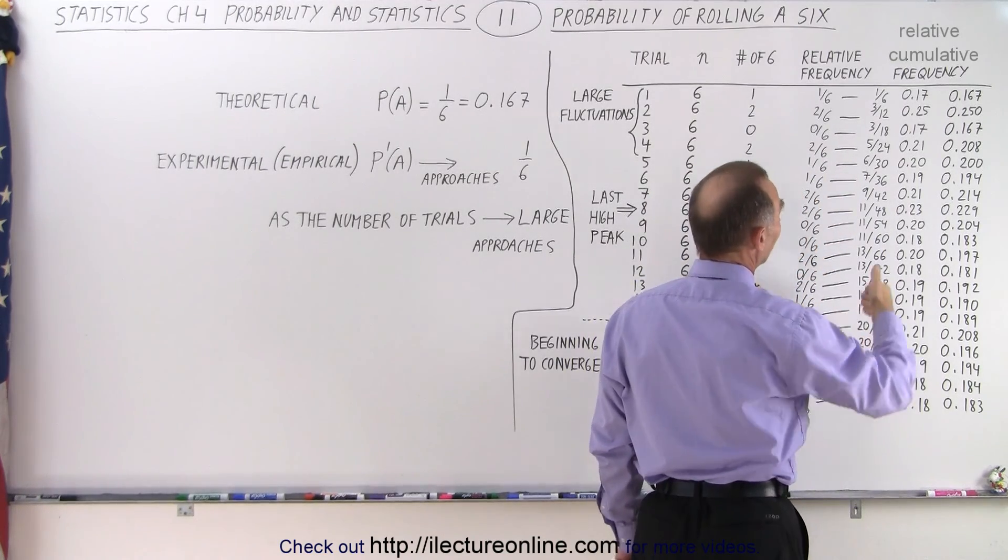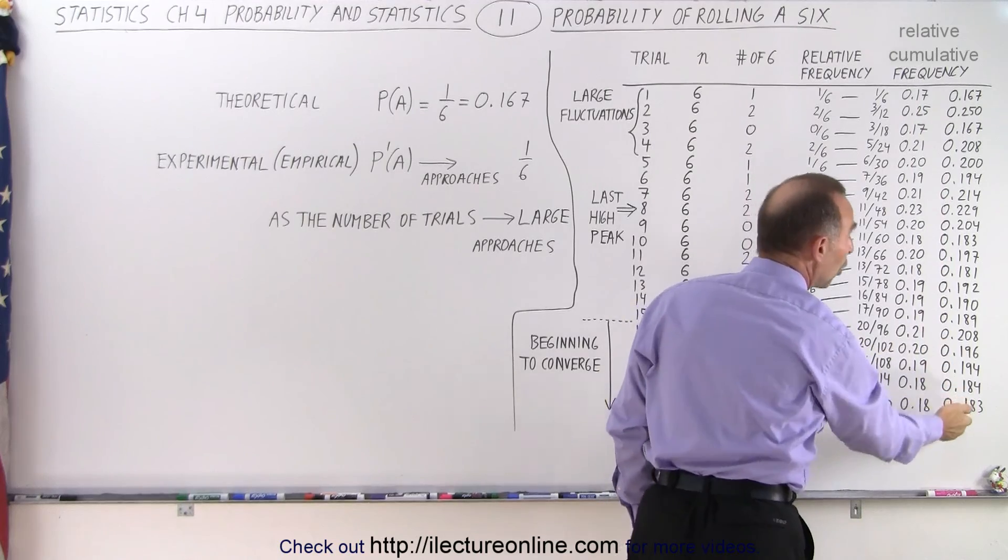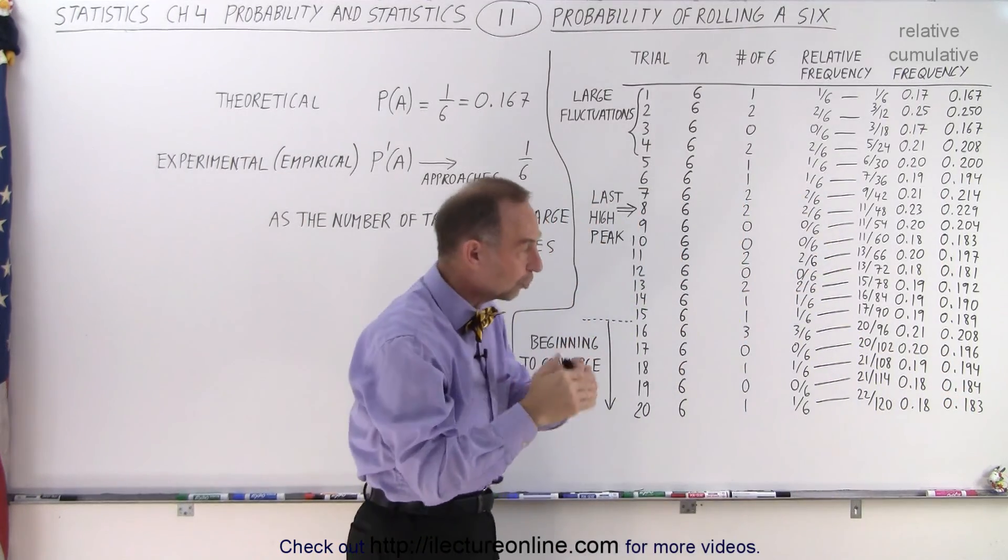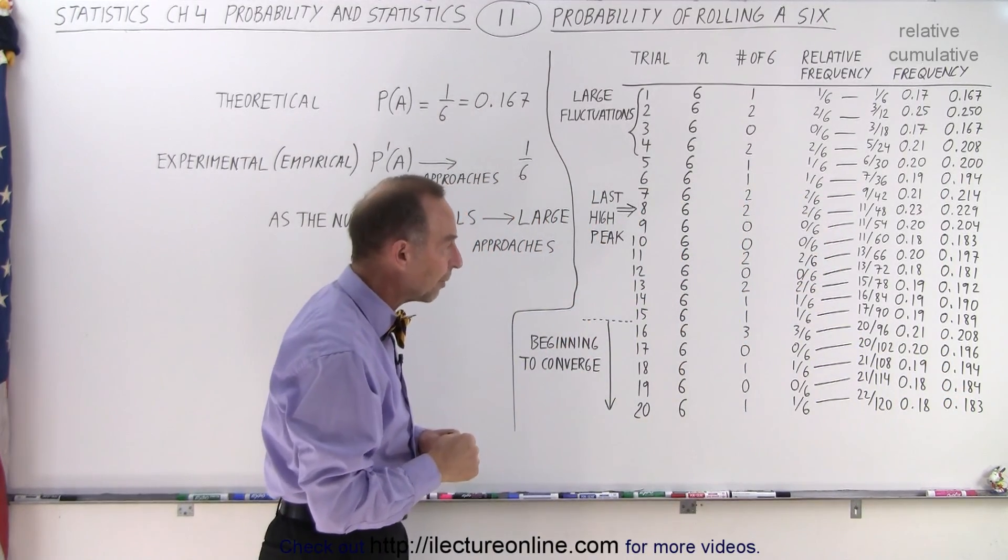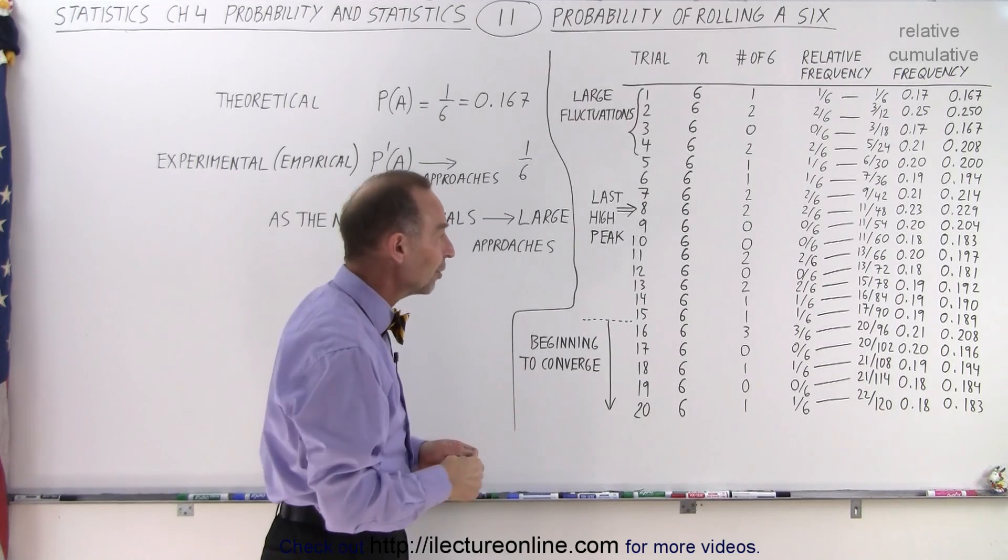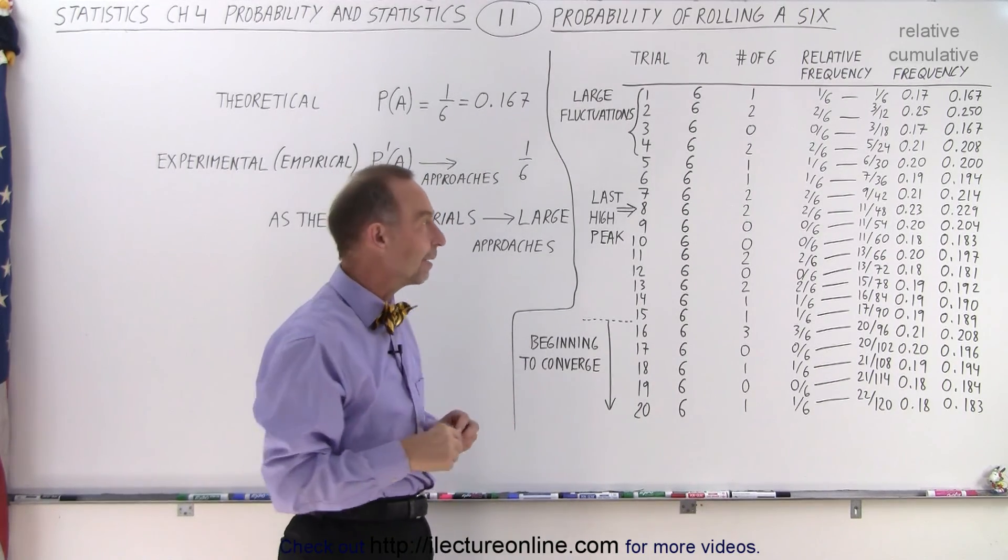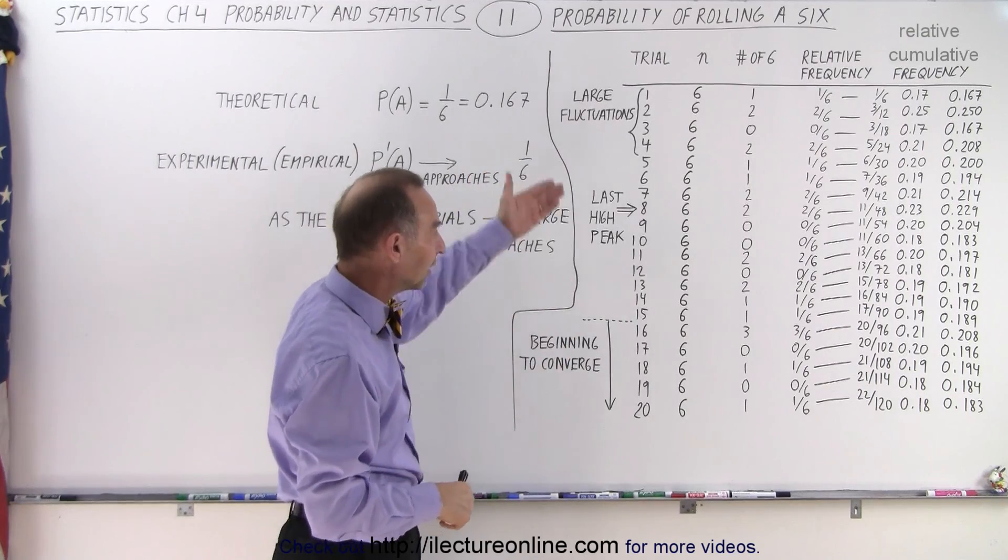So you can see that the cumulative frequency tends to go towards or tends to converge towards the theoretical probability as the number of trials increase. But it may not be quite as smooth as you might think. So it's kind of interesting to take a look at this.